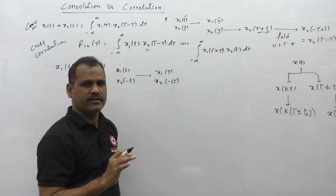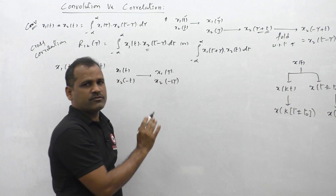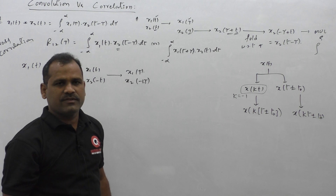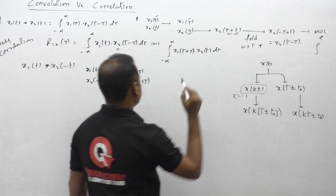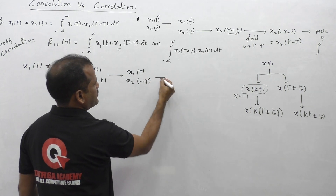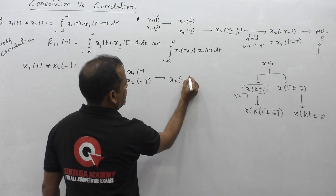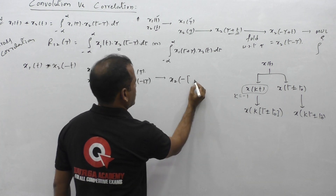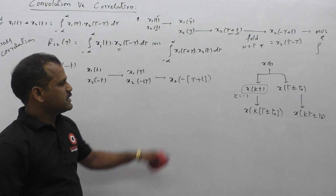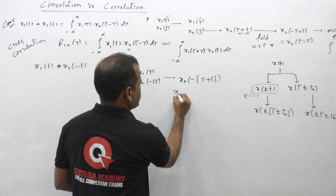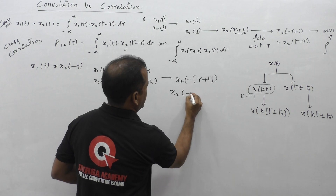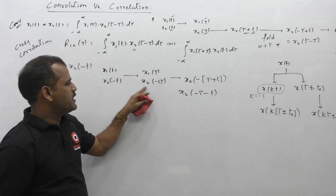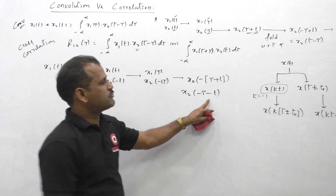x2(-tau) means x2(tau) is multiplied with constant -1, so this is already in the scaled form with k = -1. Now we have to shift that scaled version by replacing tau with tau + t. As per the format for shifting a scaled version, we write: minus of (tau + t), so we get x2(-(tau + t)), which equals x2(-tau - t). This is the function after shifting of the reflected version x2(-tau).